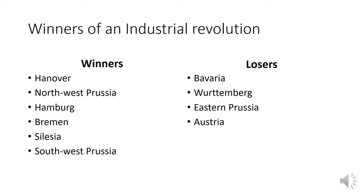So who would be the winners of an industrial revolution in Germany? The winners would be places like Hanover, Prussia, Hamburg, and Bremen. The losers would be Bavaria, Württemberg, and Austria. It is also worth noting that within Prussia, traditional power came from the eastern Junkers and their estates. With industrialisation, areas in the northwest and southwest of Prussia would become much richer, meaning that area would lose a lot of power and money.